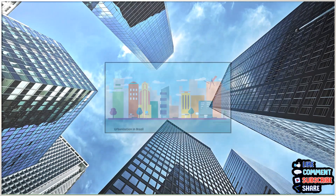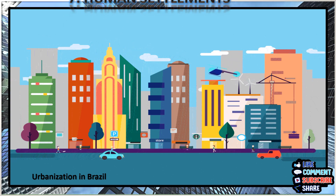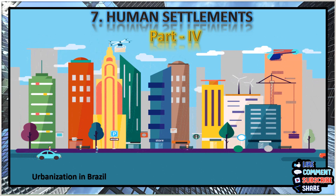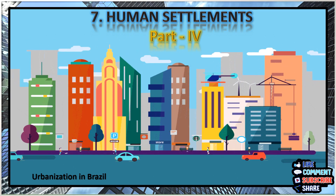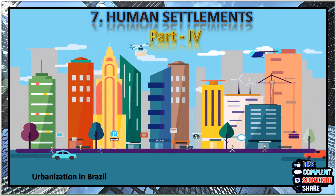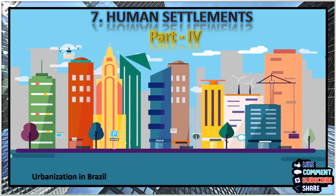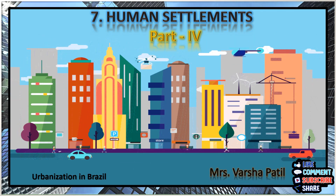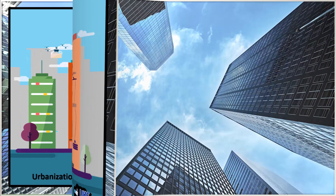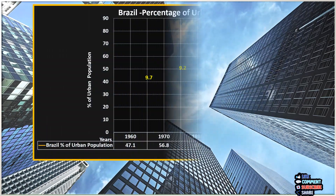Welcome back students to Chapter 7: Human Settlements, Part 4, which is the last part of this chapter. In the previous video we have already studied the concept of urbanization, settlements, urban and rural areas, and factors affecting urbanization. In this video we will quickly study urbanization in Brazil on page numbers 48 and 49.